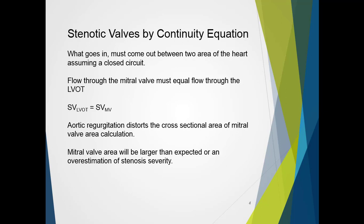Consider if there was regurgitation of the aortic valve. The cross-sectional area for the mitral valve calculation would be distorted. The stroke volume through the left ventricular outflow tract would be greater than that of the mitral valve. The mitral valve area would be larger than expected, leading to underestimation of stenosis severity.